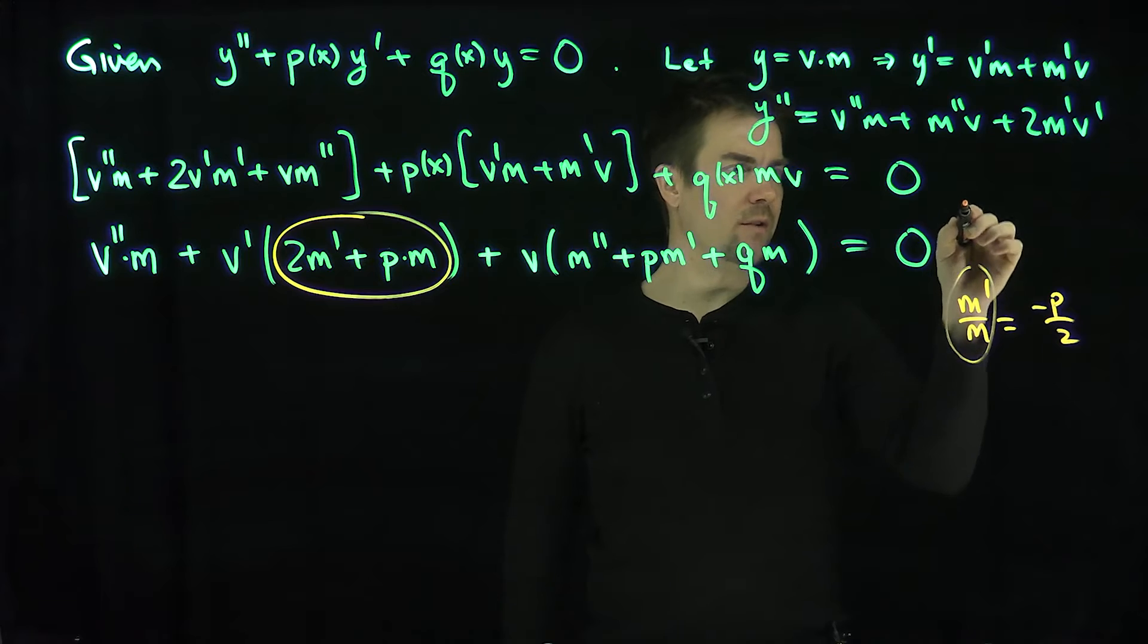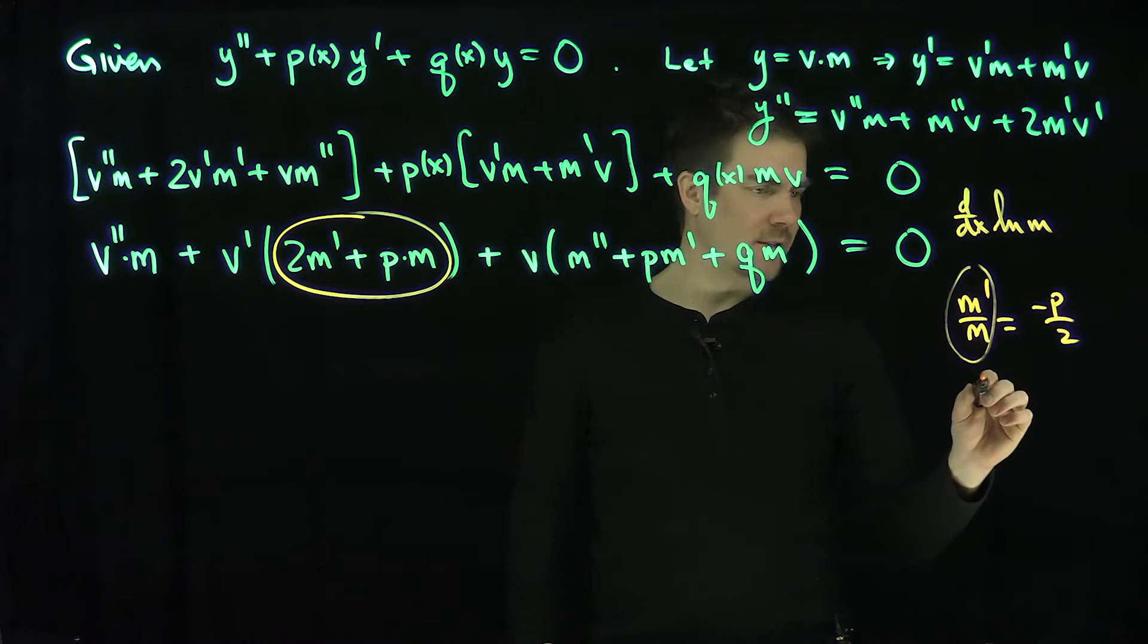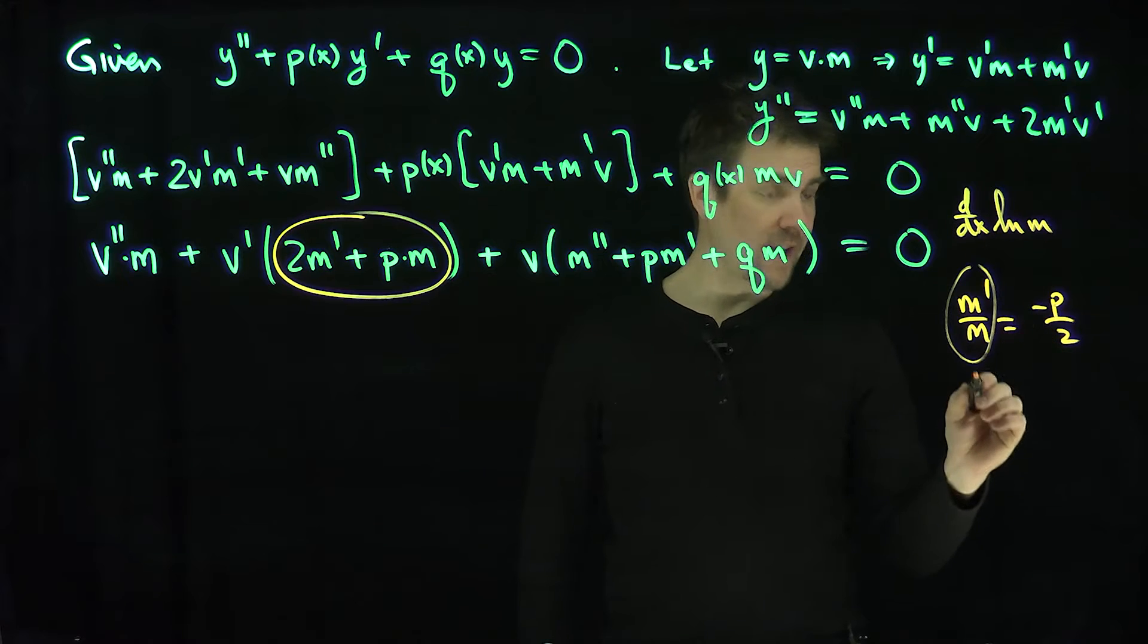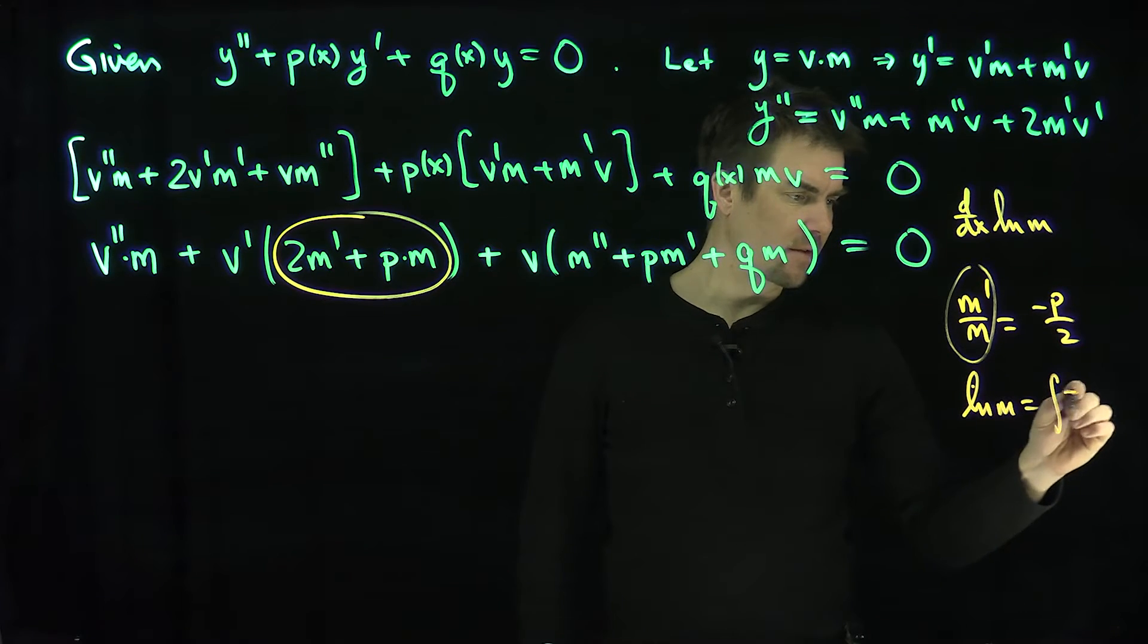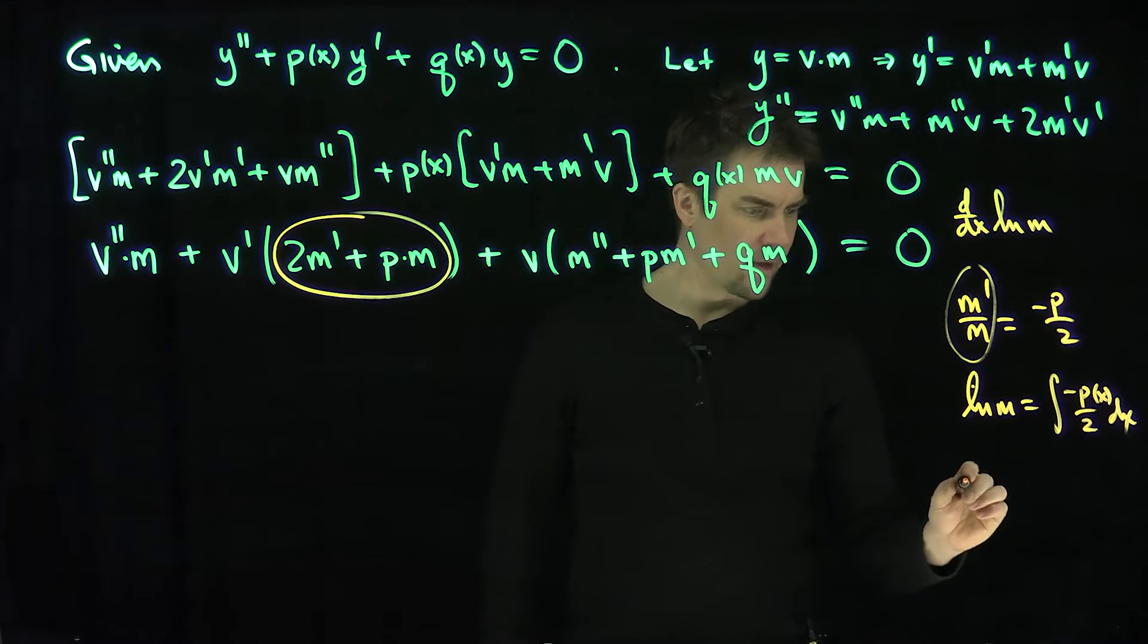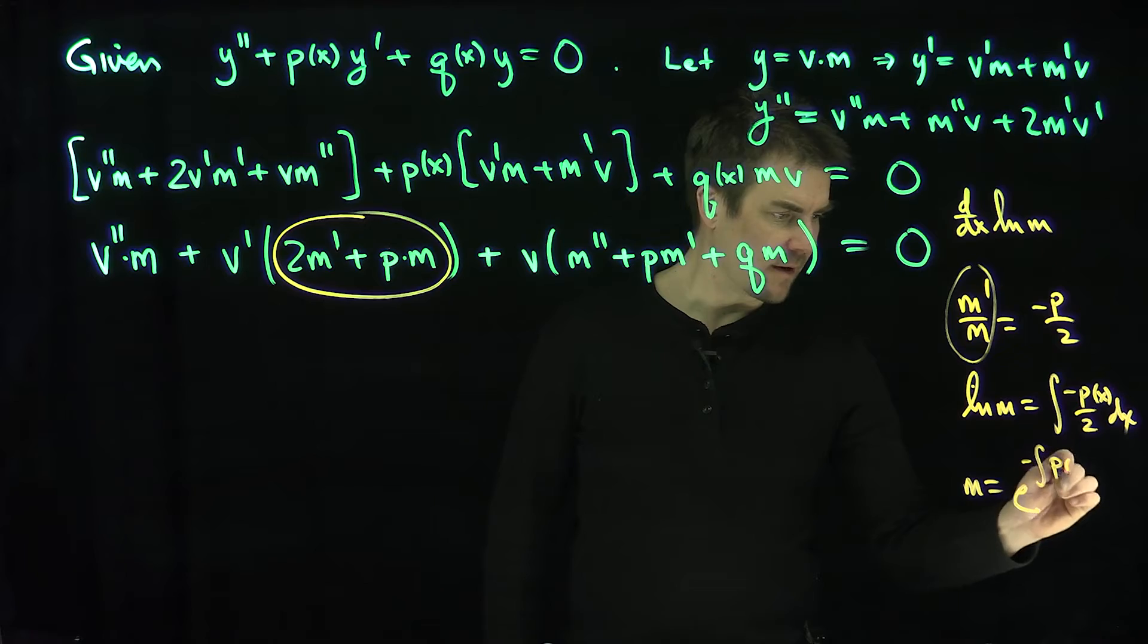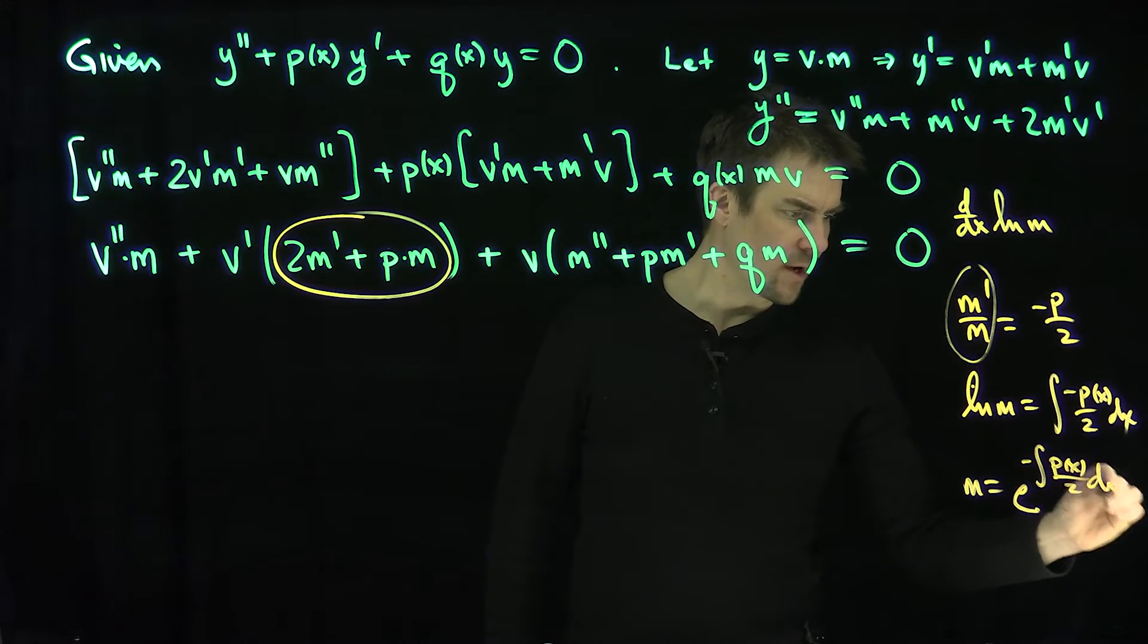Of course, this is the logarithmic derivative. That's the derivative of the log of m. And so that tells me that the log of m is the integral antiderivative of e to the negative p over 2. So I have that the log of m is an antiderivative of p over 2.